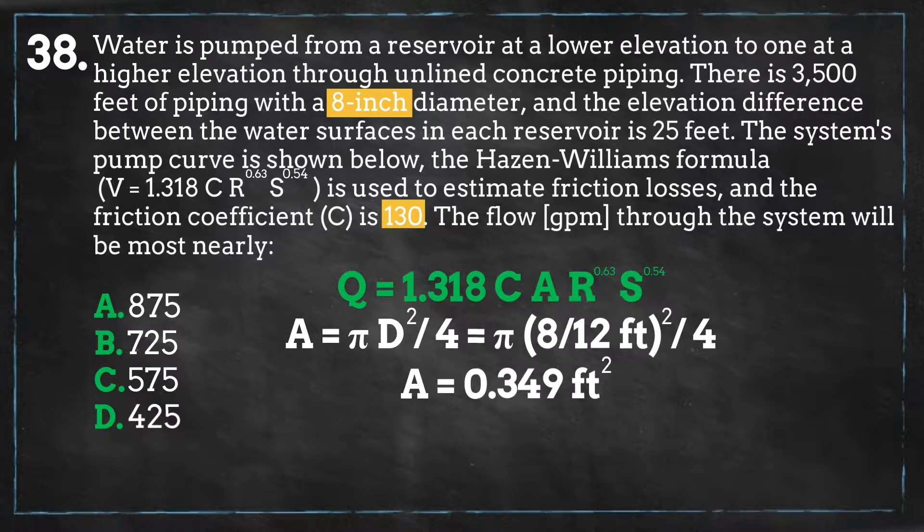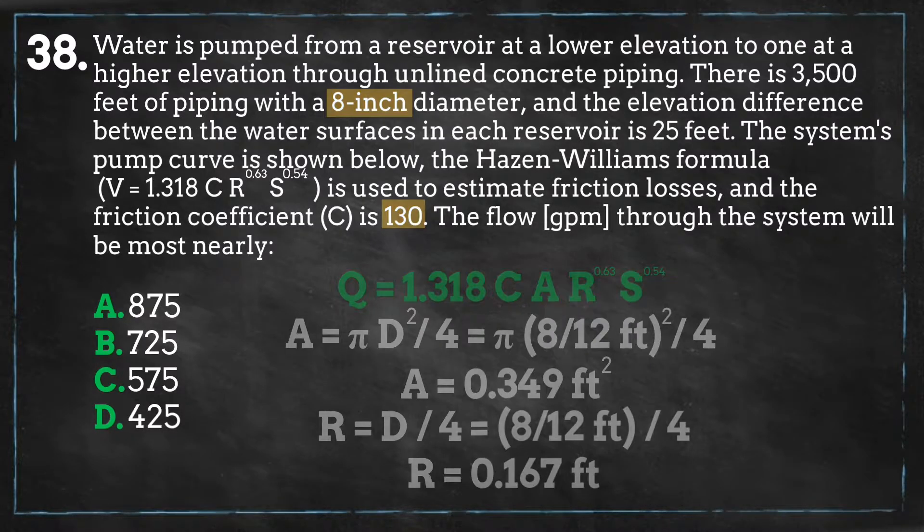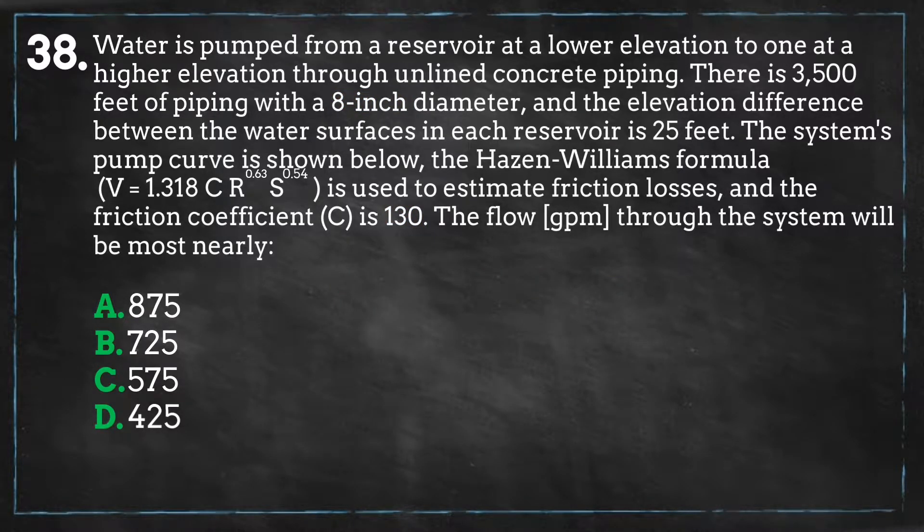We can solve the hydraulic radius, which for a circular pipe is one quarter of the diameter, which equals about 0.17 feet. After placing these terms into the equation, we are left with the following.